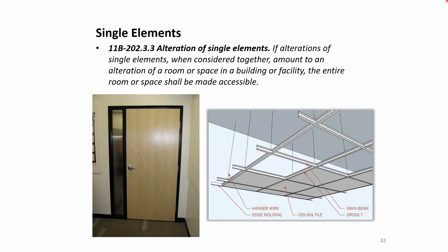Another example: a door frame and hardware in an office that needs to be replaced due to wear and tear is considered a single element — a complete system — and does not require the entire room to be made accessible. Similarly, replacing a ceiling including grids, wires, and ACT tiles would all be considered a single element if you're replacing the ceiling as a system.